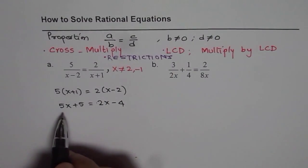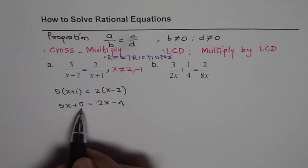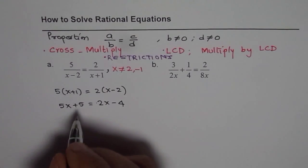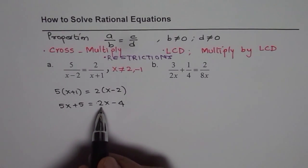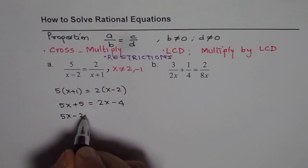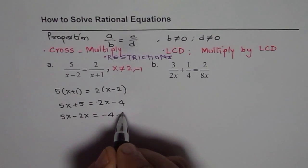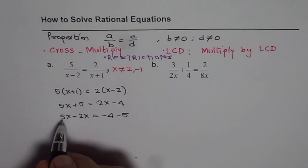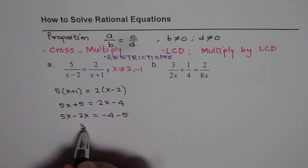You need to write 5x plus 5 equals 2x minus 4. Then you take away constants from each side, which is minus 5 from each side, and minus 2x. So ultimately we will get 5x minus 2x equals minus 4 minus 5.